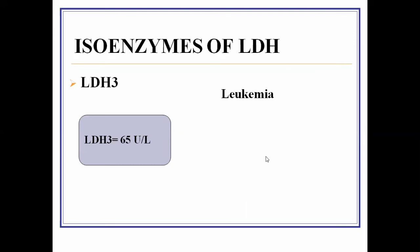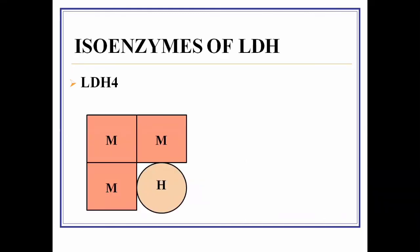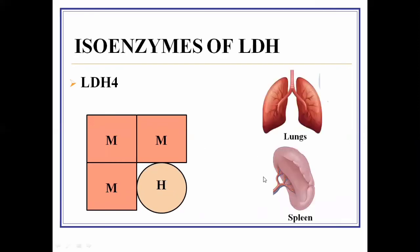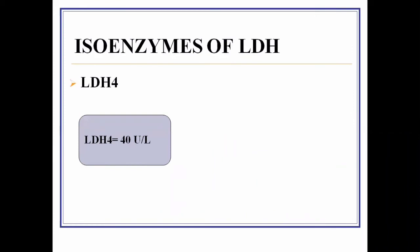LDH4 is made up of three M-type and one H-type polypeptide chain. It is tissue specific for the lungs and kidneys. The normal value of LDH4 in blood is 40 units per liter. Values exceeding this indicate injury to the lungs and kidneys, leading to pulmonary infarction, lung cancers, and other lung diseases.